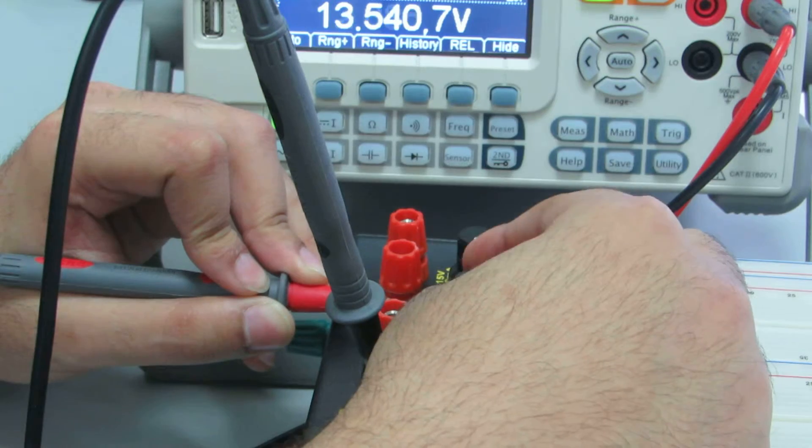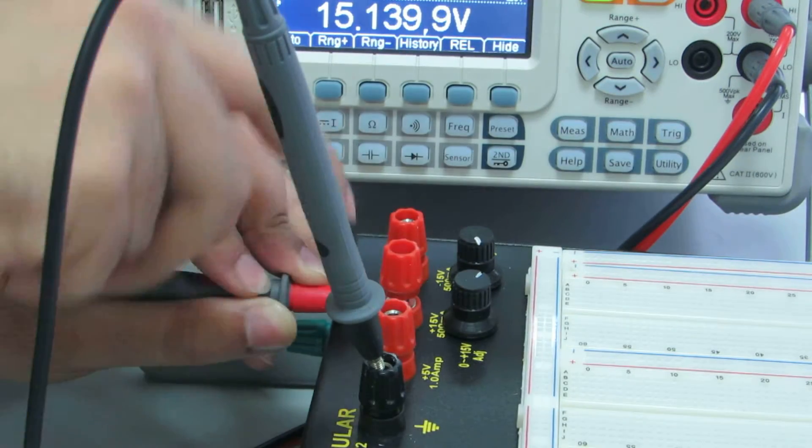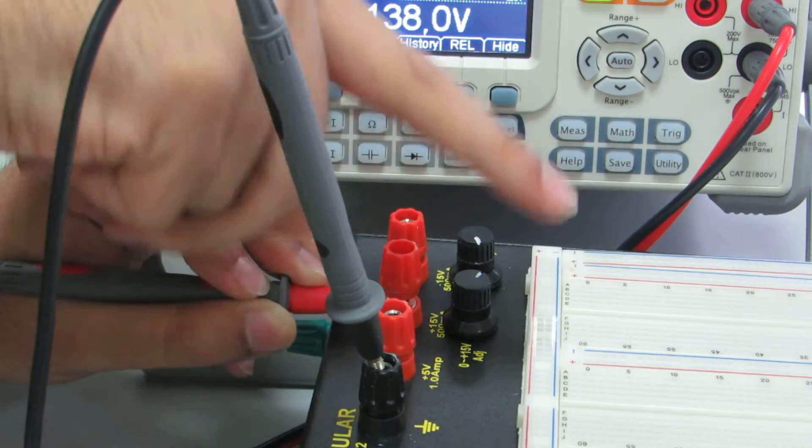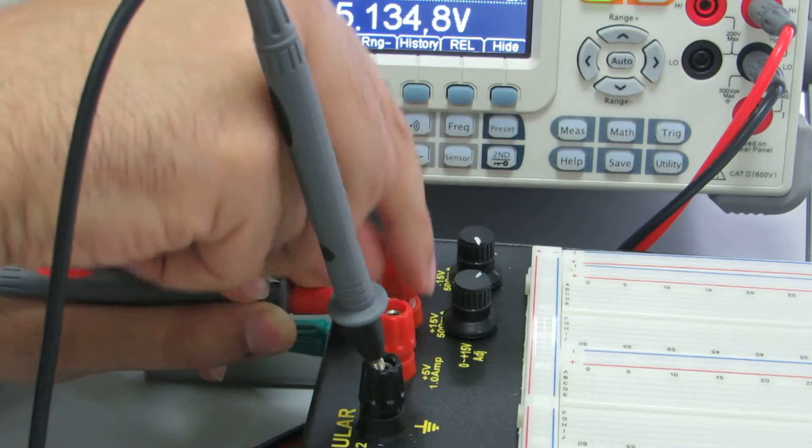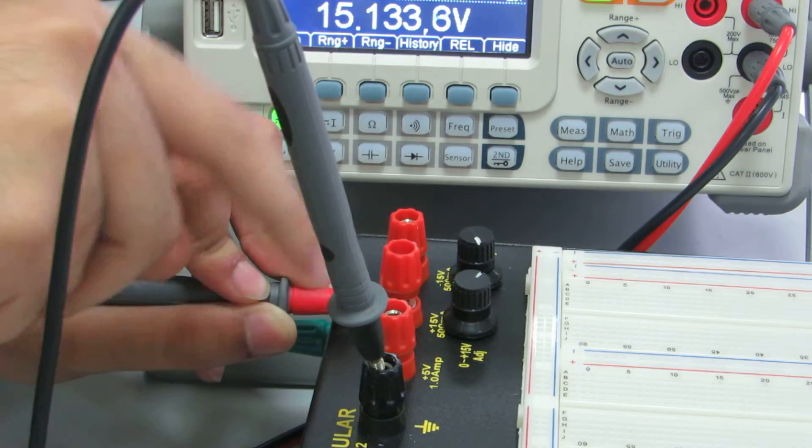You unscrew this one and then wrap a wire around it and then connect it to your breadboard. If you have a banana plug, you can just directly plug it on the top and that's it.